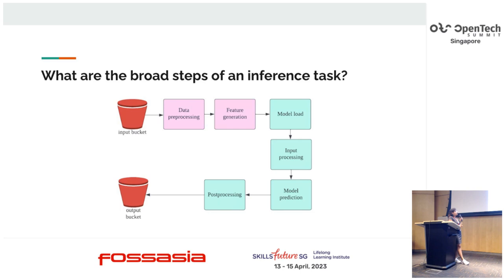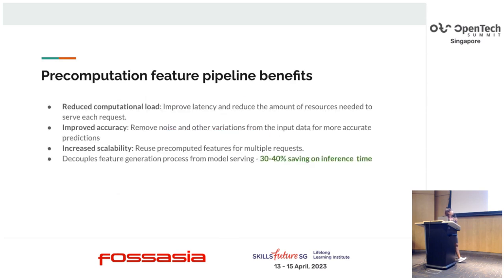That gave rise to the idea of creating a pre-computation feature platform. Whenever data comes in, we first do feature computation and then embed the request to the model to get the prediction. The benefits are significant: multiple models sharing features reduces computation load. We generate all features at once, store them in a feature store, and retrieve them as each model requires. This has overall reduced the computation load and resources needed for each request, and has improved accuracy at the model side.